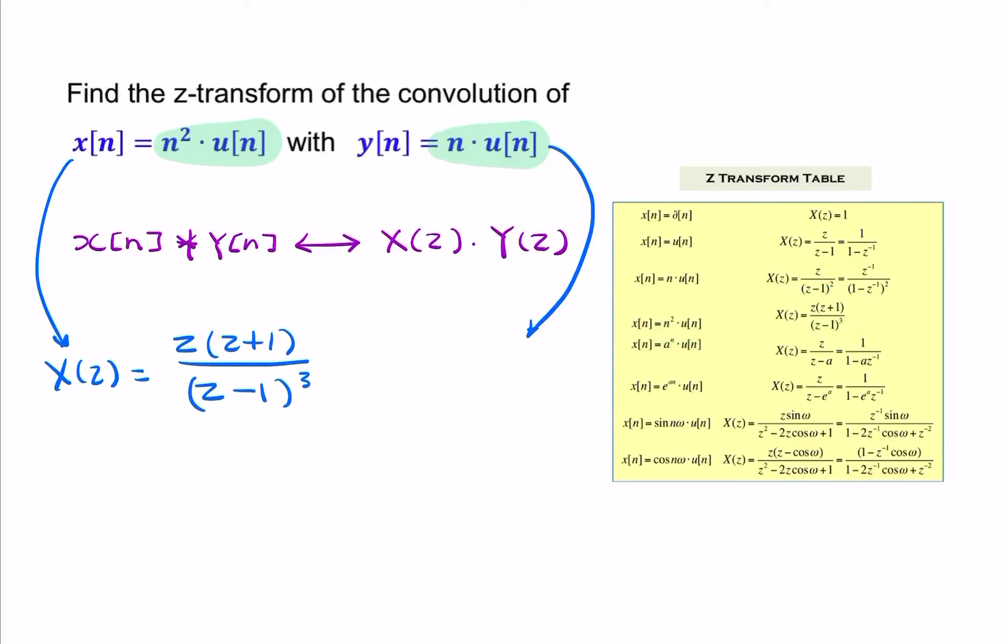I'd do exactly the same to find Y of Z. I get Y of Z from the table. What we're looking for is something that looks like n u of n, a unit ramp function, discrete ramp. There it is, your discrete ramp.